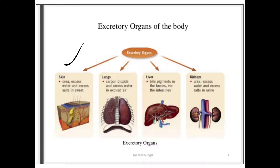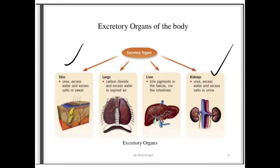The skin is an excretory organ that secretes urea, excess water, and salt in the form of sweat. The lungs secrete carbon dioxide and excess water in expired air. The liver secretes bile pigments, which are removed via the intestine in faeces. The kidneys excrete urea, excess water, and excess salts in the urine.